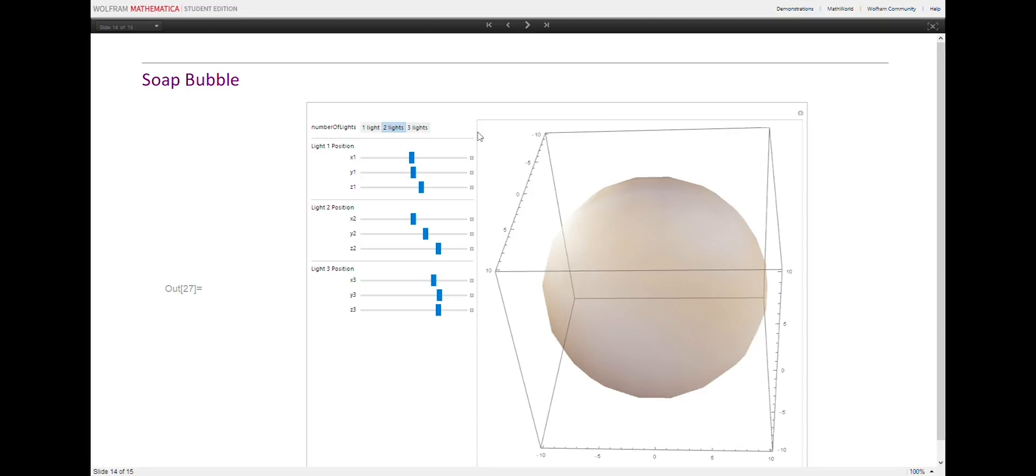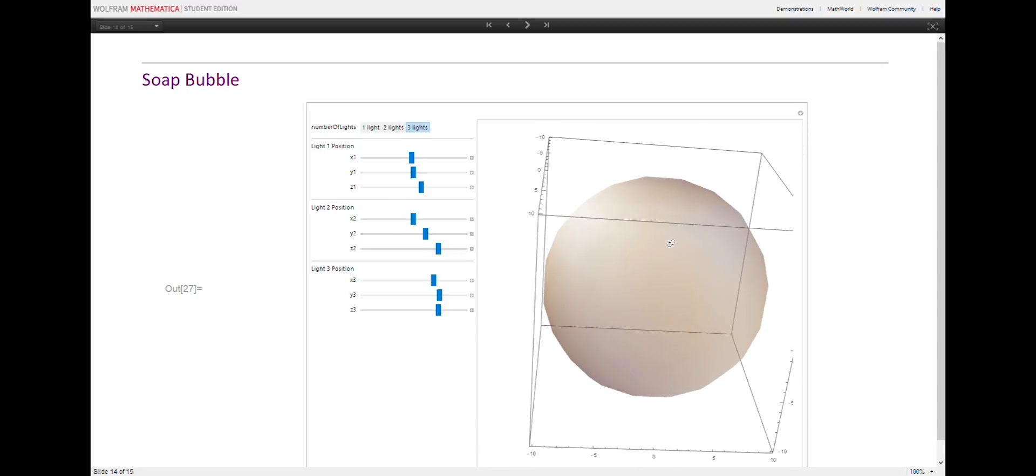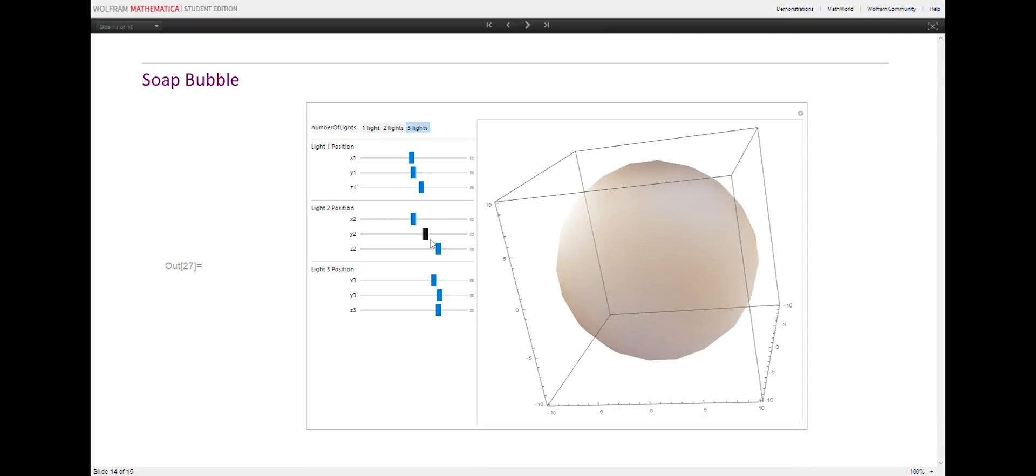This simulation shows the effect of multiple point source lights on a soap bubble. Note that in real life, light sources around a soap bubble usually aren't just point sources, and the bubble isn't an even thickness throughout, as is assumed in this simulation. Hence, the color patterns that we see on surfaces of soap bubbles are usually far more complex than what we see in the simulation.